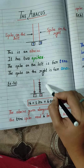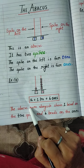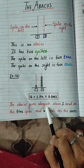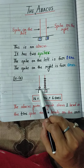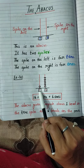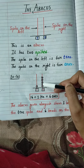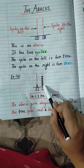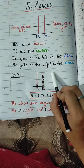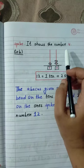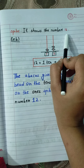This is an abacus. The abacus shown here has 1 bead on the tens spike and 6 beads on the ones spike. So it shows the number 16.